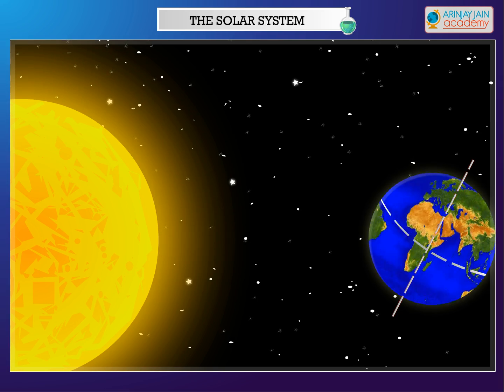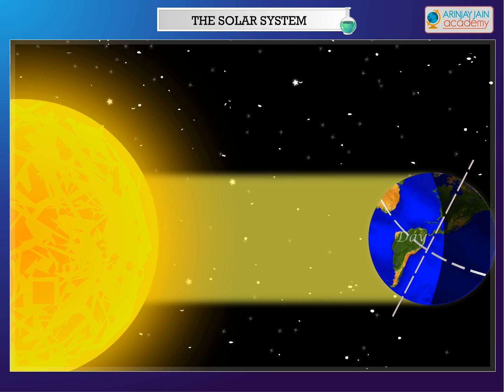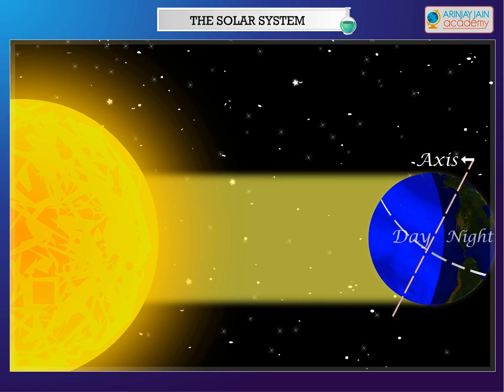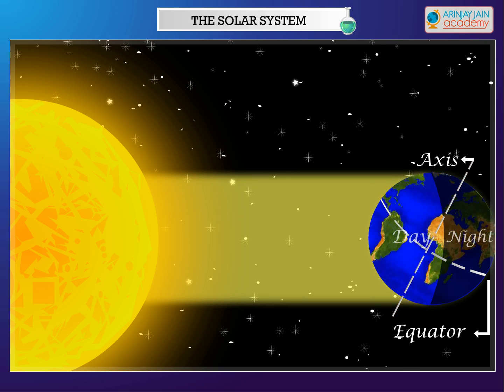Rotation - formation of day and night. Planets spin around their axes. This movement is called rotation.